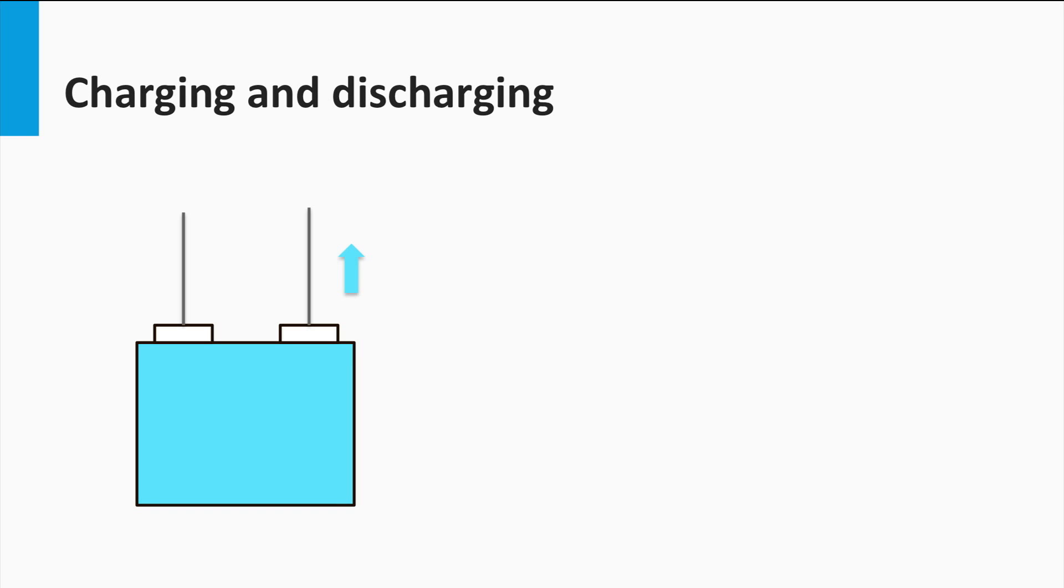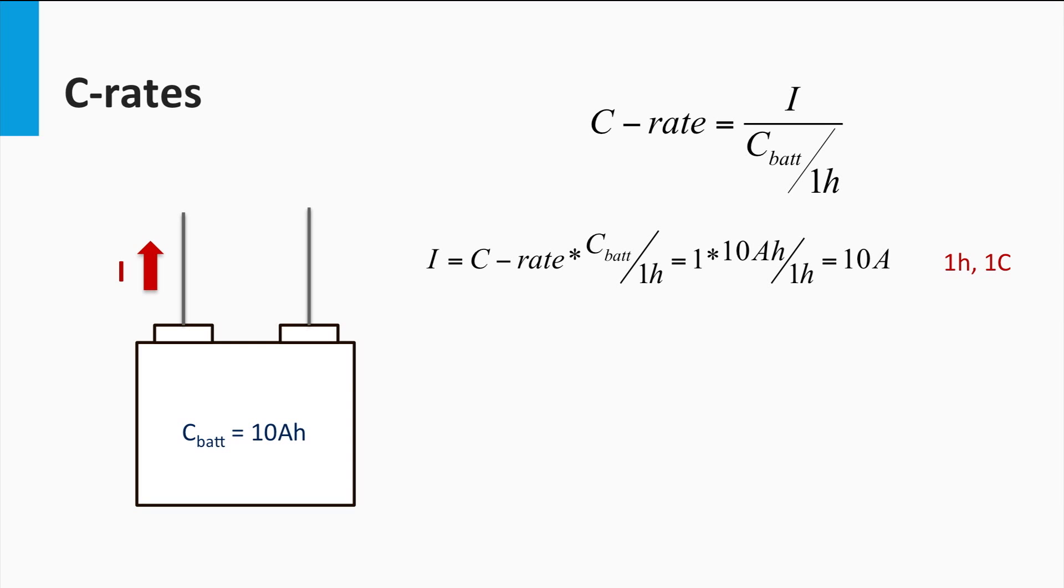We now come to another useful battery specification, called the C-rate. Let's first understand how the battery charges and discharges. As discussed in the previous video, the charging and discharging of the battery at the cell level is just the right kind of chemical reaction taking place. At an electric level, charging and discharging depend on the direction of current into and from the battery respectively. How does this relate to the battery capacity?